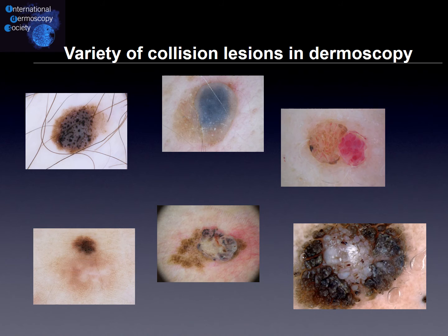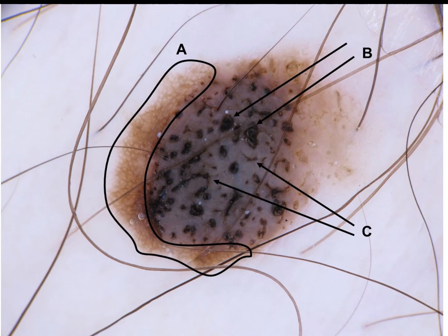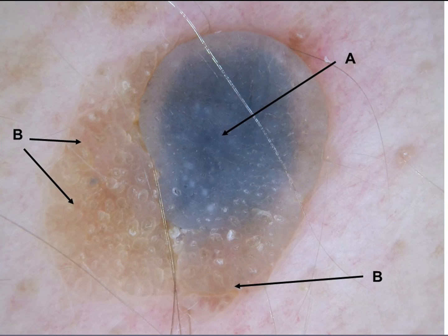Let us have a short look at some collision lesions in dermoscopy. For example, in this first lesion you see the melanocytic part in area A, and in B and C the part of the seborrheic keratosis. The second collision lesion shows in part A a blue nevus and in part B the initial start of the seborrheic keratosis.